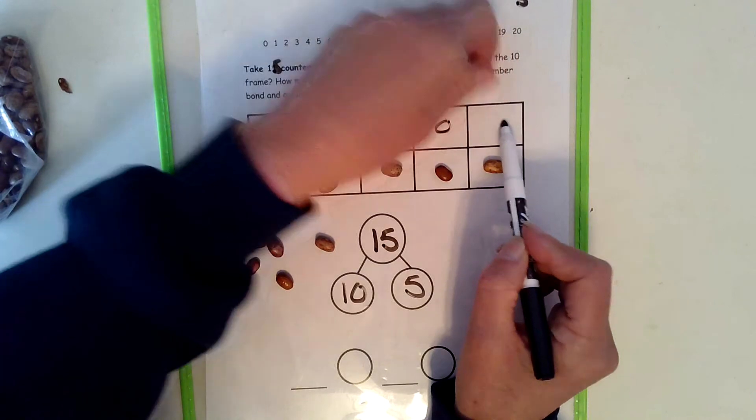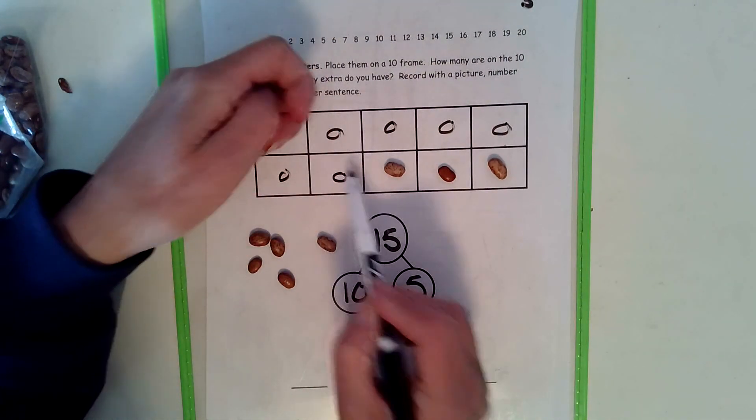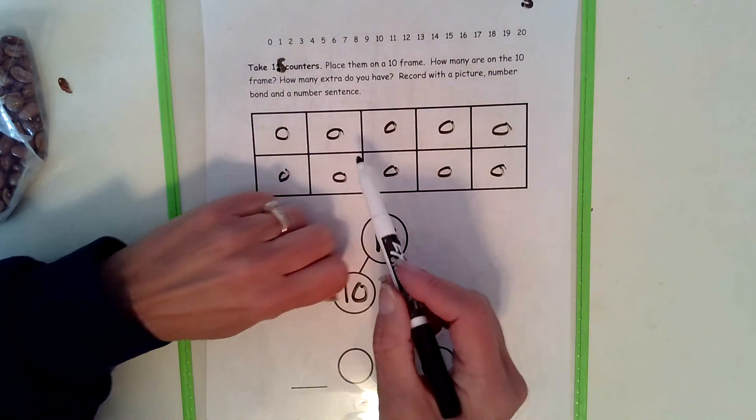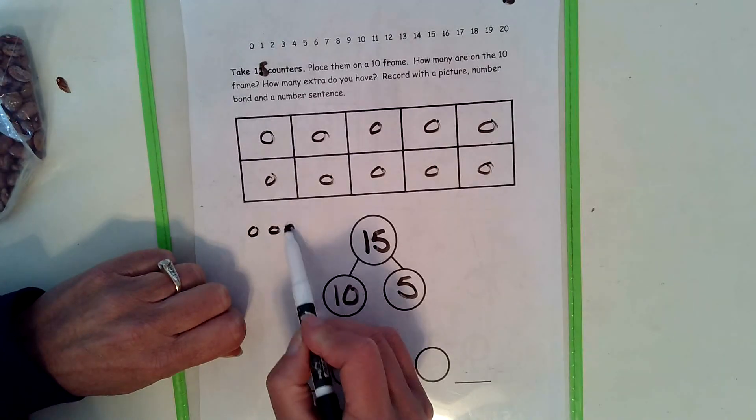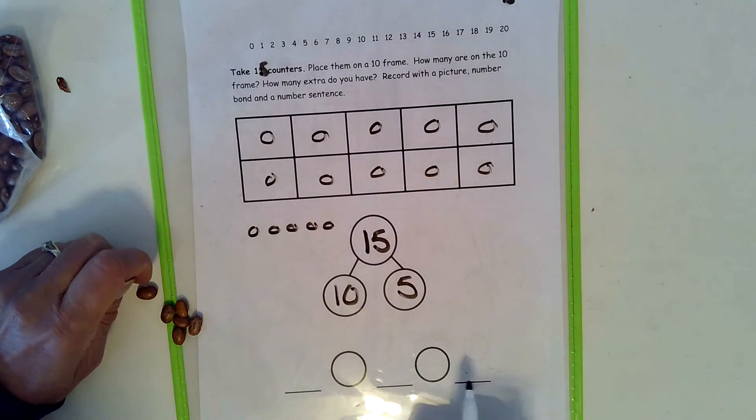Because you're recording with a picture, a number bond, and a number sentence. So when it's all done, you will see you have 1 ten and 5 ones. 10 plus 5 equals 15.